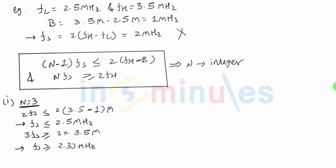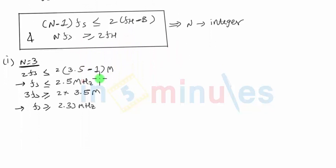So we have got two conditions over fs. One says that fs should be less than some value and the second says that it should be greater than some value. If we combine these two statements together in one statement, then we get the complete range of valid values of sampling frequencies which say 2.33 megahertz should be less than equal to fs less than equal to 2.5 megahertz.